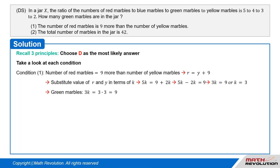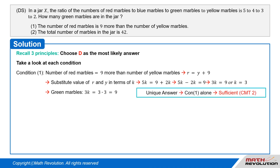Condition 1 gives us the number of red marbles to be 9 more than the number of yellow marbles: R = Y + 9. Substituting in terms of K: 5K = 9 + 2K, so 5K − 2K = 9, giving 3K = 9, or K = 3. Therefore the number of green marbles is 3K = 3 × 3 = 9. This value is unique, so the condition is sufficient by CMT2, meaning the number of answers must be 1.